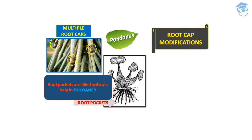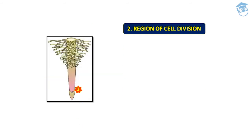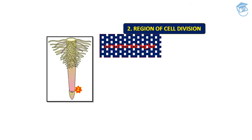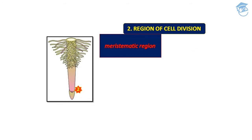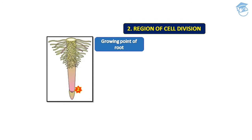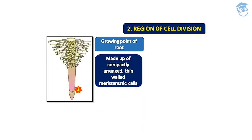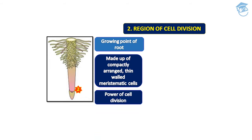The second region of a typical root is the meristematic region, where cells keep on dividing. The growing point of the root is made up of compactly arranged, thin-walled meristematic cells — cells that have the power of cell division. The function of this region is to help in longitudinal growth.